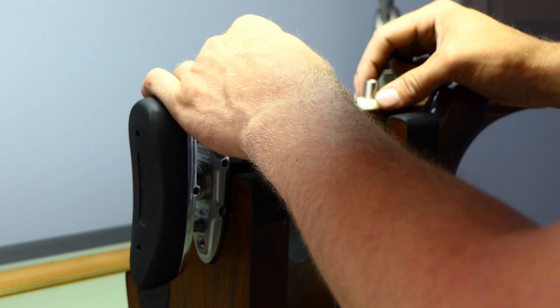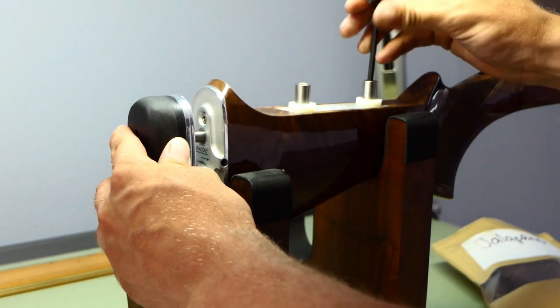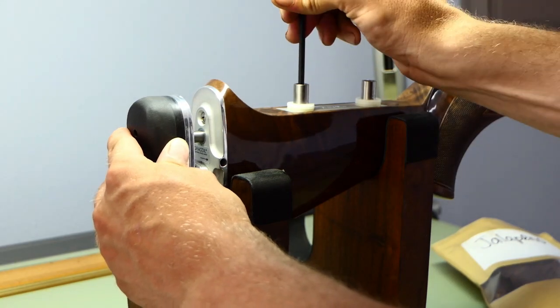So doing that I'm going to move these, there we go, just a little bit. Tighten these back down with my 5/32nd Allen wrench.